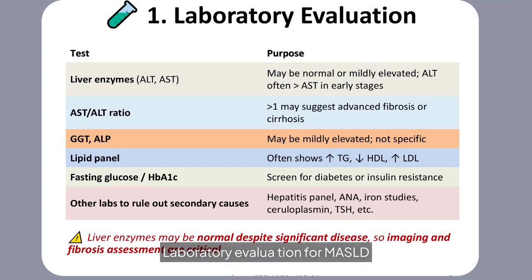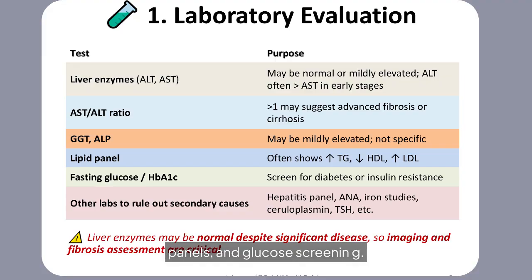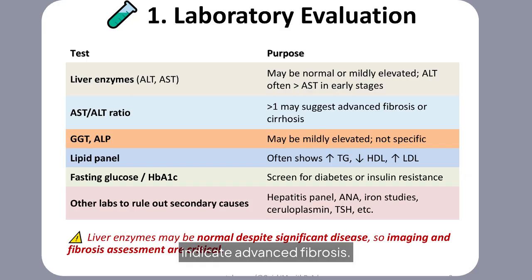Laboratory evaluation for MASLD includes liver enzyme tests, lipid panels, and glucose screening. Elevated AST and ALT ratios may indicate advanced fibrosis. Despite normal liver enzymes, imaging and fibrosis assessments remain critical for accurate diagnosis and management.